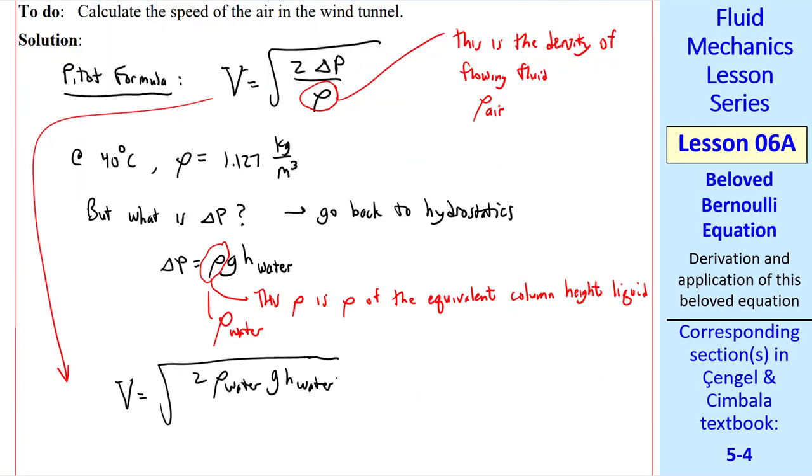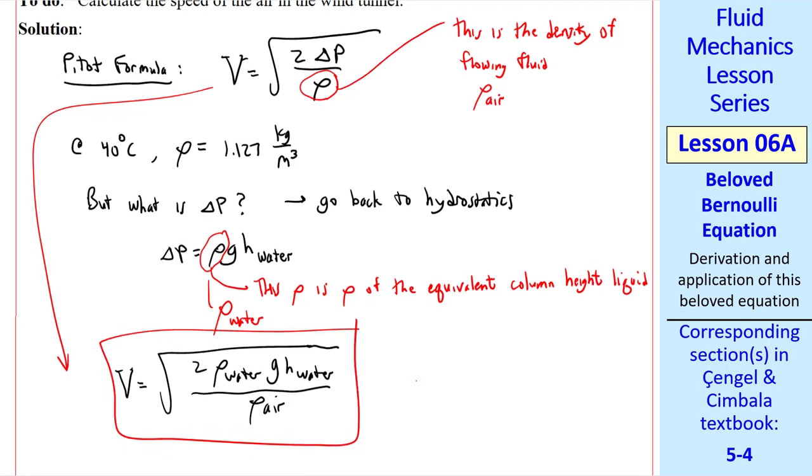Putting all this together, V is the square root of 2ρ water gh water over ρ air. And that's our answer in variable form. Finally, we plug in the numbers.